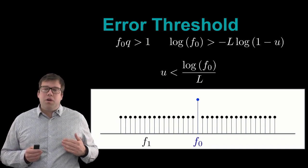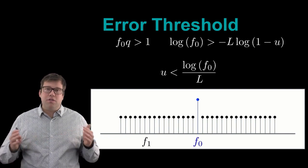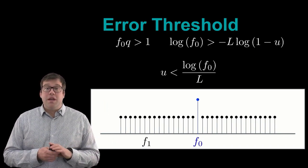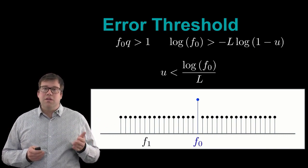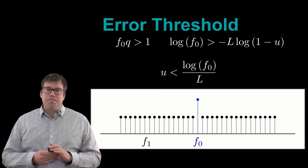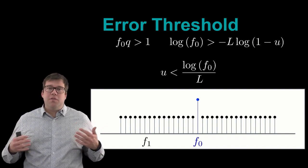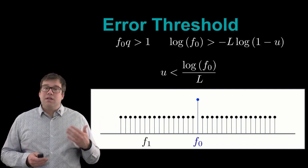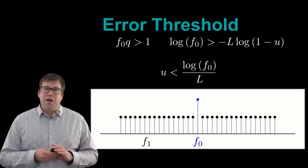The error threshold — also called the error catastrophe — defines the maximum mutation rate that allows for adaptation in a complex fitness landscape. This maximum rate depends on both the sequence length and how much fitter the master sequence is relative to all others. Notably, because of the logarithm, increasing fitness gives diminishing returns in raising this threshold, whereas the mutation rate is much more sensitive to sequence length. This concept is generally obeyed by all known life. In the next lecture, we'll connect these ideas to a more chemical rather than sequence-based view of evolution.